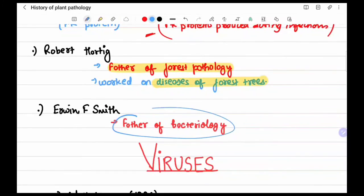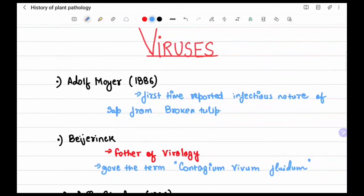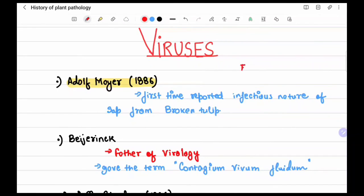In the history of viruses, Adolph Mayer first reported the infectious nature of sap from broken tulips. The first viral disease reported was broken tulip disease — an important examination question.